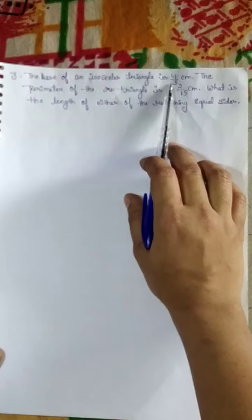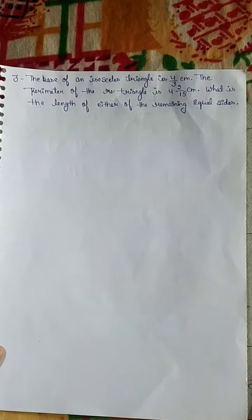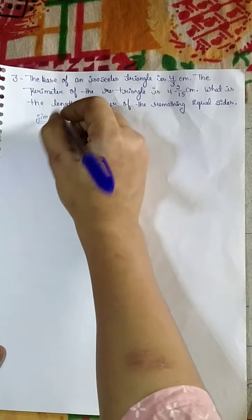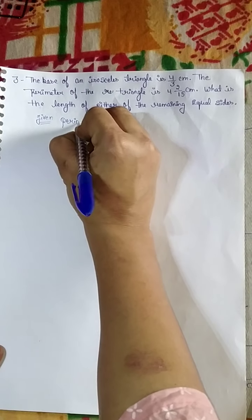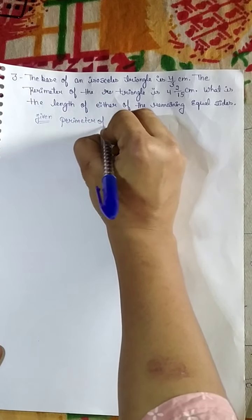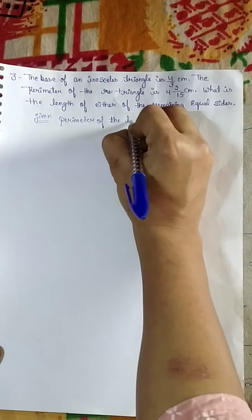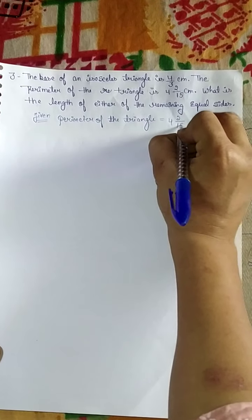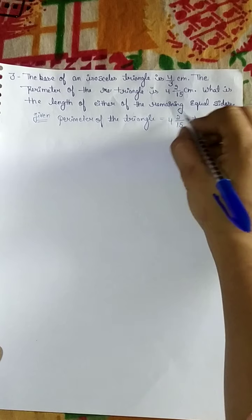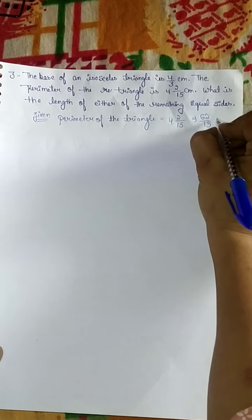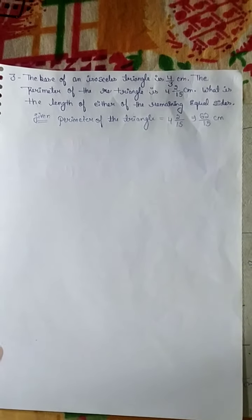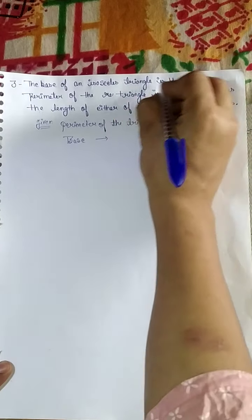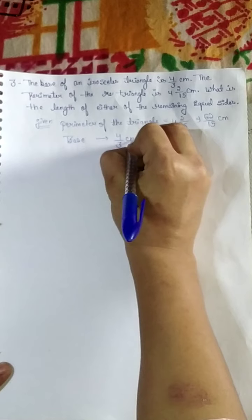First, let's write down the given quantities. The perimeter of the triangle is given as 4 and 2/15, which we can write as 62 upon 15 centimeter. The base is given as 4 by 3 centimeter.